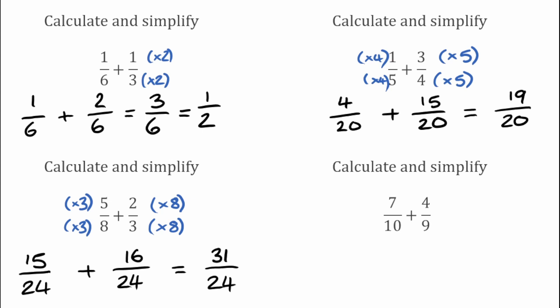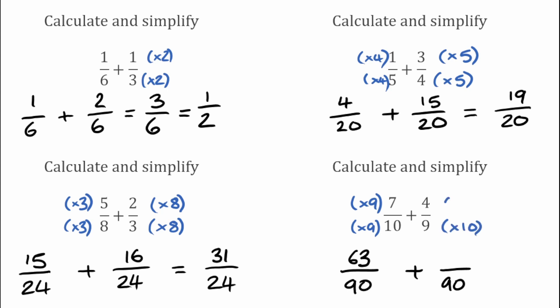For our last question here we've got 7 over 10 add 4 over 9. Our lowest common multiple of both of those would be 90, so again two fractions over 90. We'd have to multiply the 10 by 9 to turn that into 90, which means multiplying the top also by 9: 7 times 9 gives 63. For the 9, we'd have to multiply that by 10 to get 90, so 4 times 10 gives 40. Adding these together: 63 over 90 add 40 over 90 gives us 103 over 90.